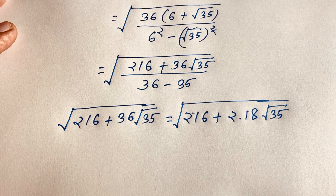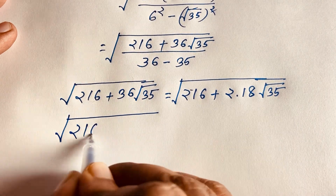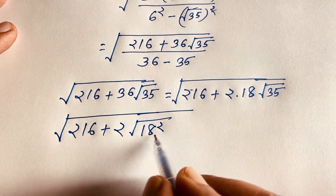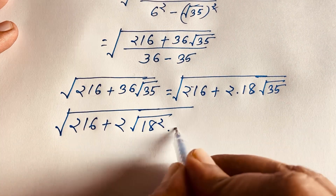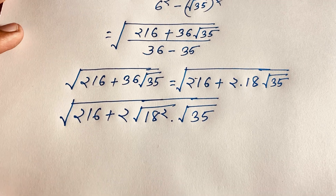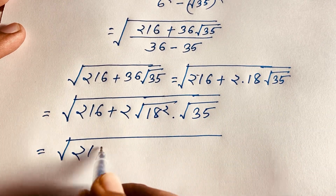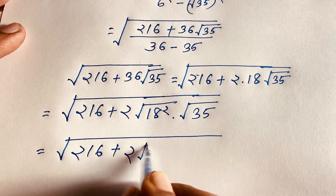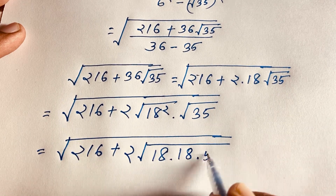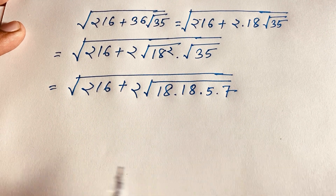Now I can rewrite this radical question as square root of 216 plus 2 times 18, where 18 squared equals 18 times 18. And square root 35 becomes square root of (5 times 7), since 5 times 7 equals 35.